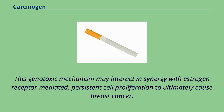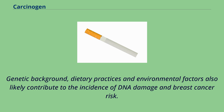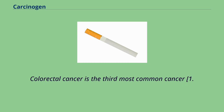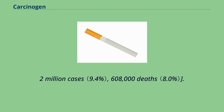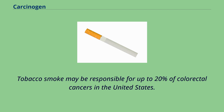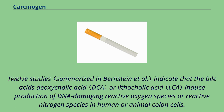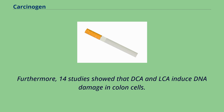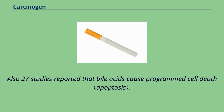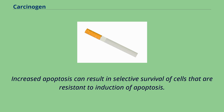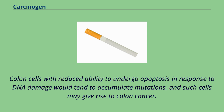Genetic background, dietary practices, and environmental factors also likely contribute to the incidence of DNA damage and breast cancer risk. Colorectal cancer is the third most common cancer, with 1.2 million cases and 608,000 deaths. Tobacco smoke may be responsible for up to 20% of colorectal cancers in the United States. Substantial evidence implicates bile acids as an important factor in colon cancer — studies indicate that deoxycholic acid and lithocholic acid induce production of DNA-damaging reactive oxygen and nitrogen species, and cause programmed cell death in colon cells.